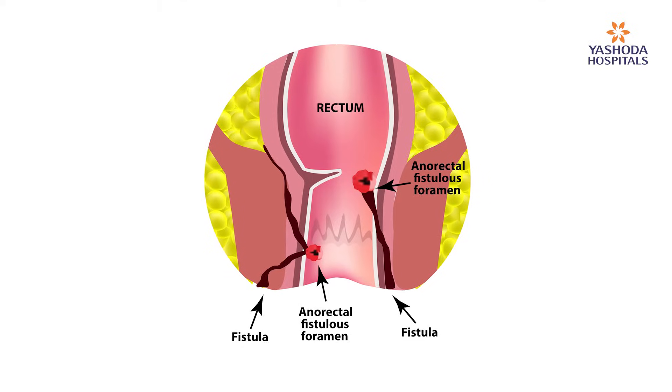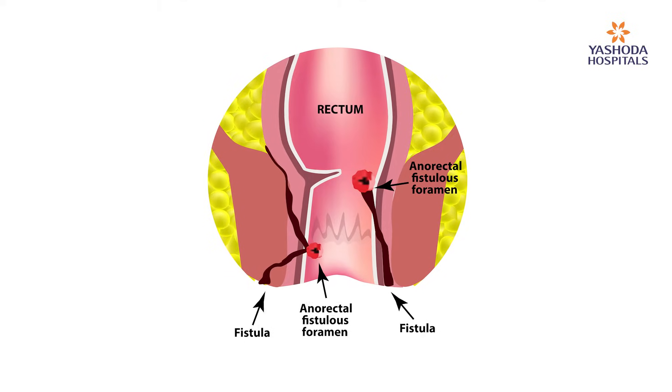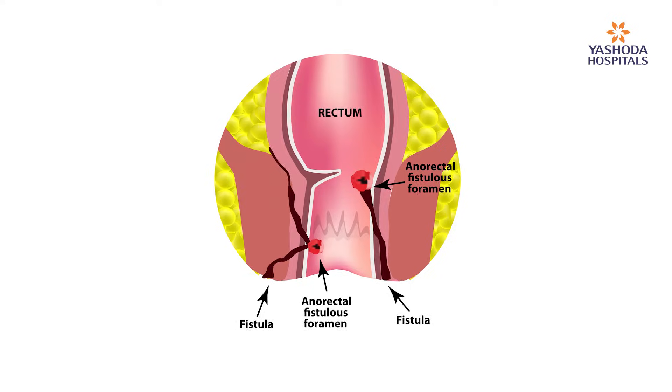So basically, what is a fistula? A fistula is nothing but a tract which connects the inside of the anal canal to the outside. The most common presentation of these fistulas is pus discharge at the anal canal, foul smell, sometimes bleeding, and sometimes a swelling — which is a painful swelling. There are different types of fistulas: high fistulas and low fistulas, and complex fistulas and simple fistulas.